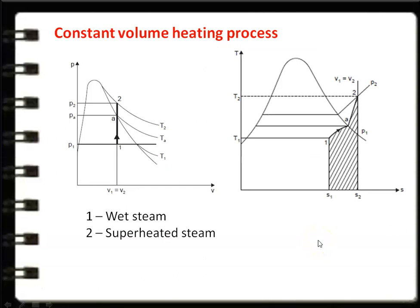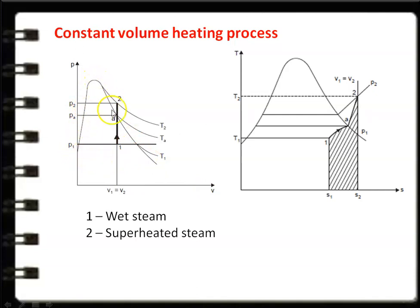The first process is the constant volume heating process. We draw the pressure-volume and temperature-entropy diagrams. In the PV diagram, the curved line is the saturation line — the saturated liquid line. We have the critical point and the saturated vapour line. Initially the steam is wet, and upon heating, the quality of the steam increases and it becomes superheated steam. In the PV diagram, constant volume is represented by a vertical line.